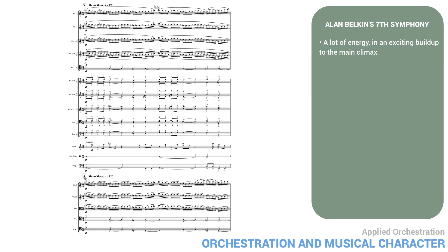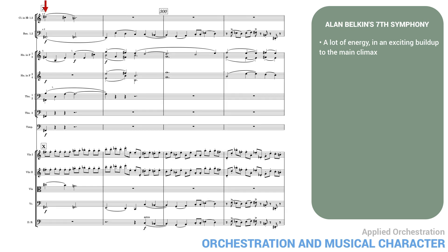At the climax in measure 309, the energetic, accented theme in the brass is accompanied by fast, cascading scales in the upper woodwinds and strings. The climactic moment is marked by a cymbal crash and the arrival of a new sound never before heard in this movement: the glockenspiel. The orchestra now feels out its entire range from the lowest to the highest. Let's listen.